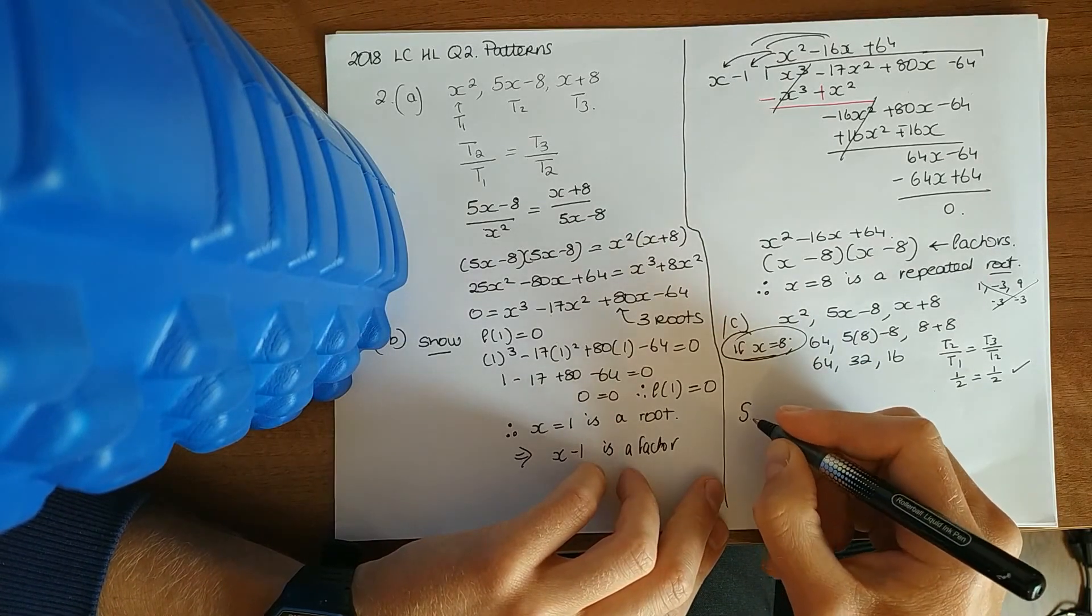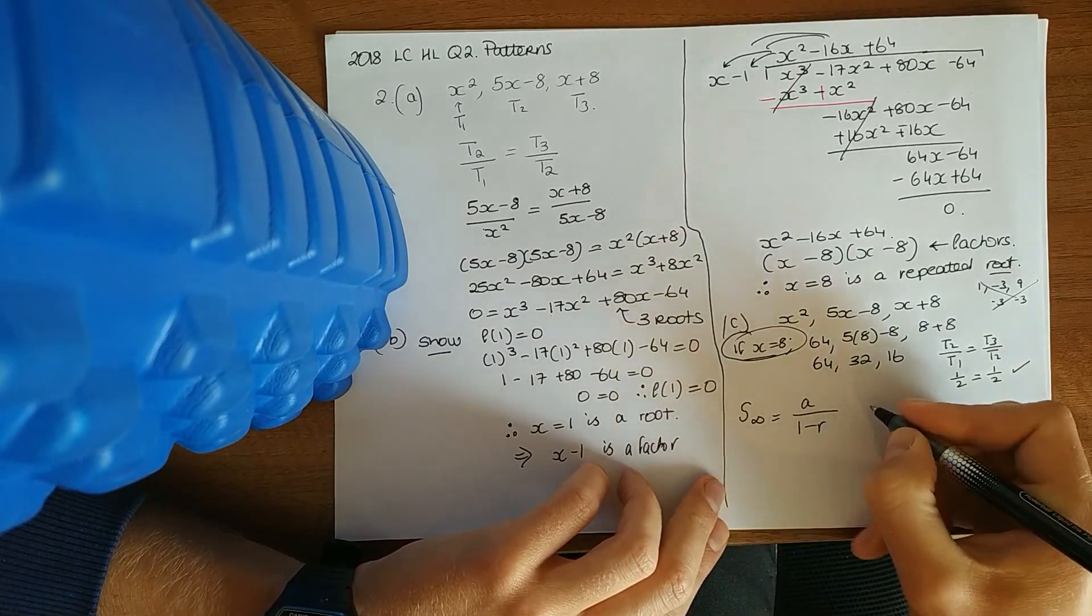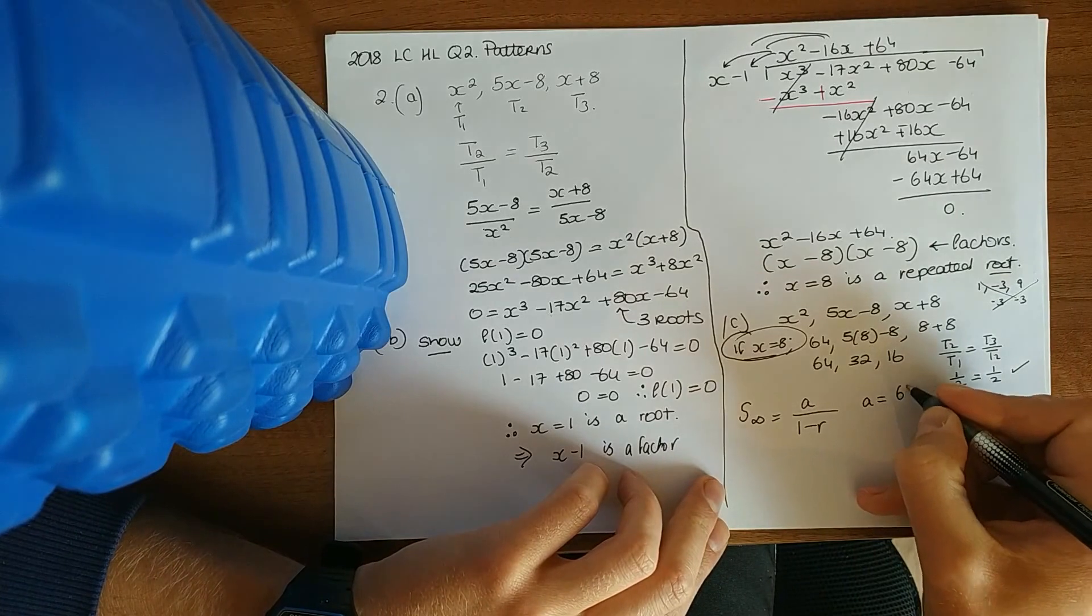And therefore it says also sum to infinity. Once you see sum to infinity, I know I'm using this formula. It's in your formula though. A is the first term. So our first term there is 64.